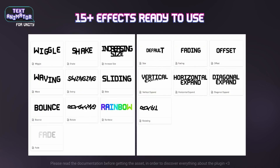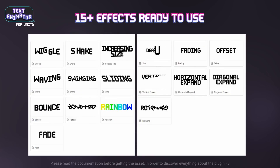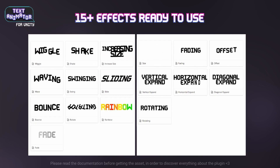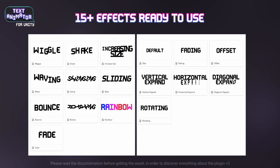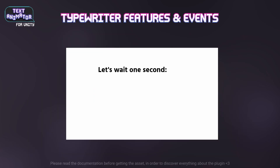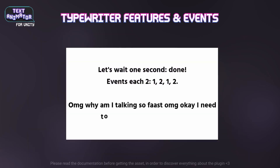You can animate letters and stack effects together from built-in to your custom ones, choose text dynamically with different speeds like characters, punctuation, and words, trigger gameplay events when a specific letter is shown, and much more. It works with any platform and rendering pipeline.